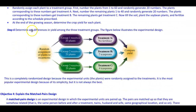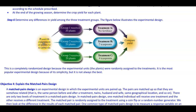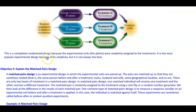Step six: determine any differences in yield among the three treatment groups. The figure illustrates the experimental design — random assignment of plants to treatments. Group 1 receives 20 plants (treatment A, no fertilizer), group 2 receives 20 plants (treatment B, two teaspoons), and group 3 receives 20 plants (treatment C, four teaspoons). You then compare the yield for all three. This is a completely randomized design because the experimental units were randomly assigned to the treatments. It is the most popular experimental design because of its simplicity, but it is not always the best.